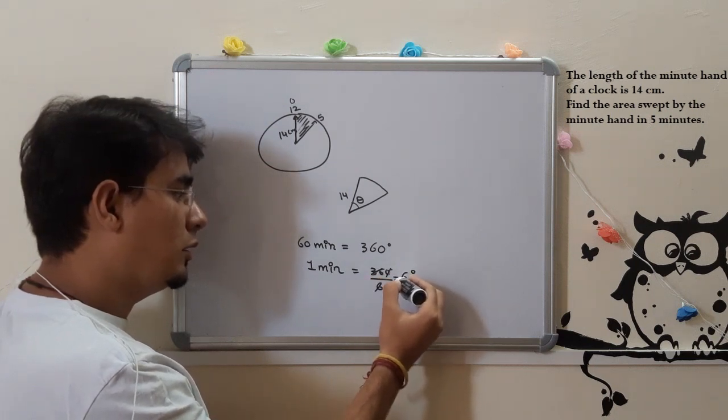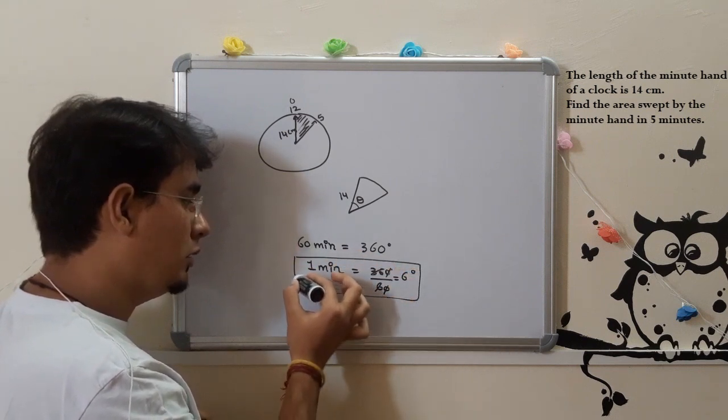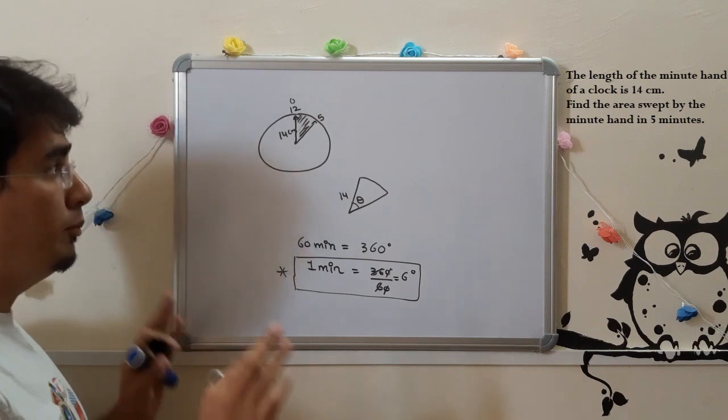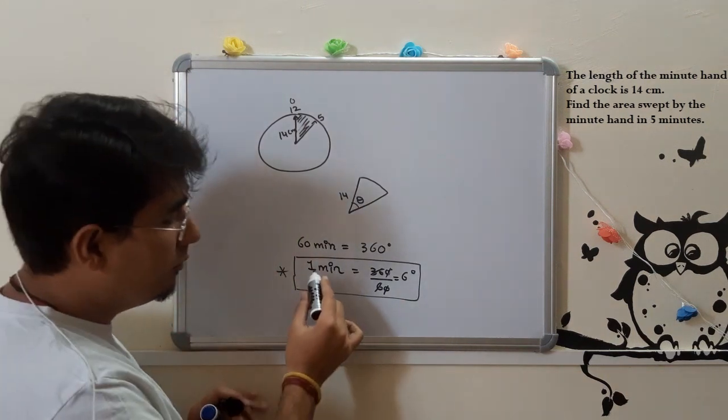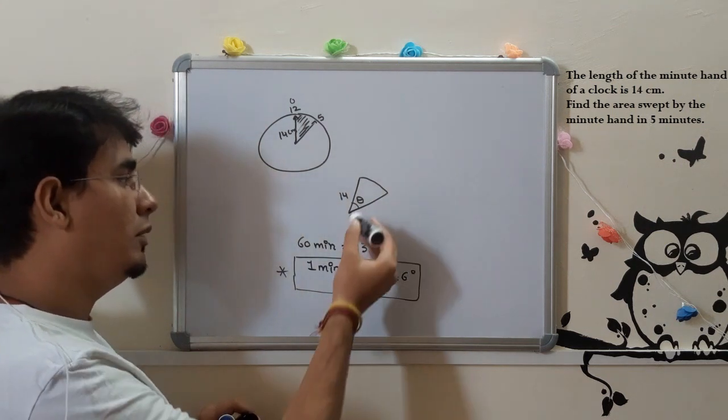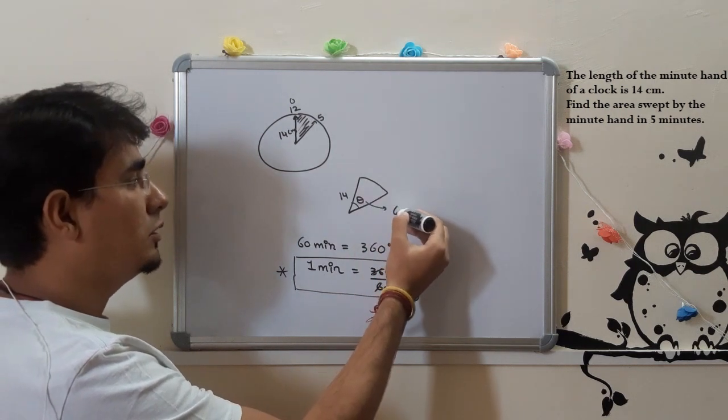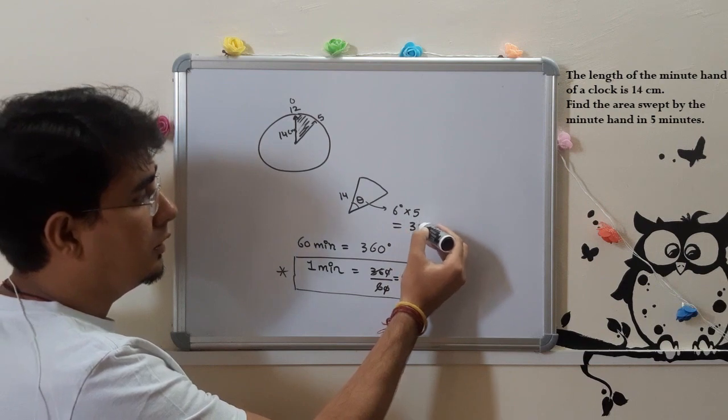So this concept is very important. For the minute hand, one minute equals 6 degrees. One minute is 6 degrees, so 5 minutes is 30 degrees.